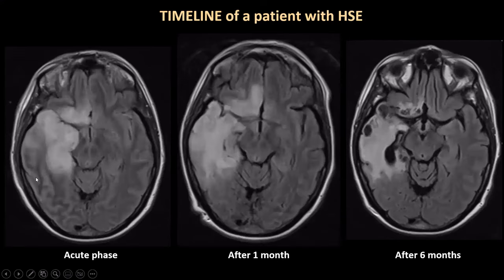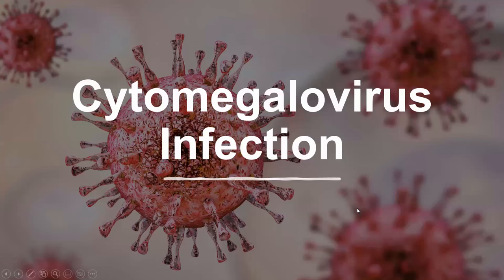Contrary to what we see in herpes simplex encephalitis: in the acute phase we see clearly asymmetrical cortical temporal edema with also involvement of extra-temporal structures and neocortex. A month later these abnormalities are still present and have not subsided. Another six months later, there are areas of tissue destruction — what is now hyperintense on FLAIR is no doubt gliosis, so scar tissue and no longer edema. There is also a clear enlargement of the temporal horn of the right lateral ventricle, suggesting tissue loss.